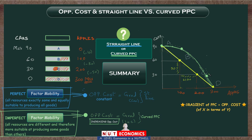Lastly, on a slightly separate note, remember that whether these PPCs are a straight line or a curve, they will always have a negative gradient. A negative gradient simply tells you that the X and Y variables are inversely related — as you try to make more apples, you will have to give up cars. This will always be true because of scarcity. If you make more of one good, you have to give up the other, and the idea of scarcity is always reflected by the negative gradient of the PPC.